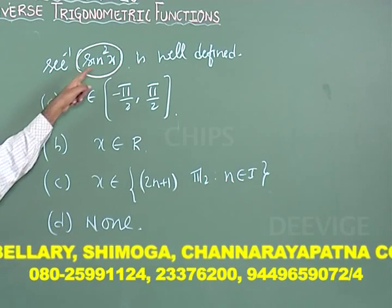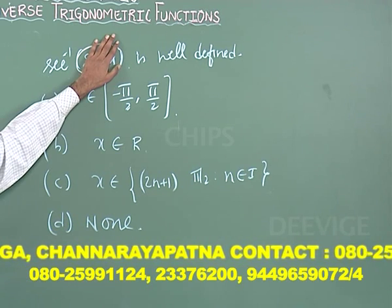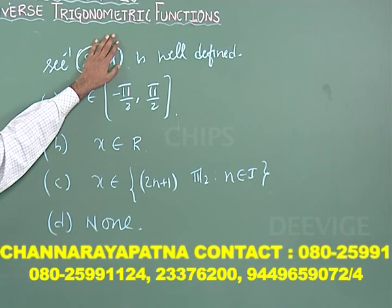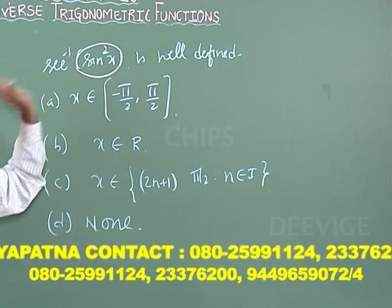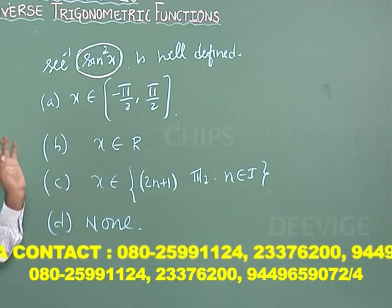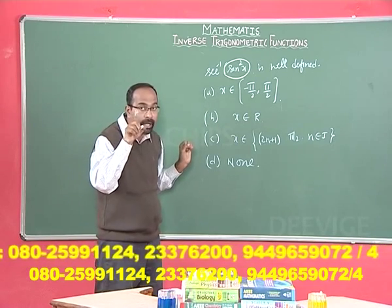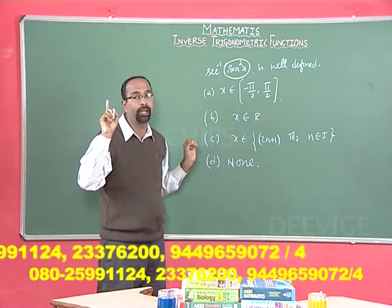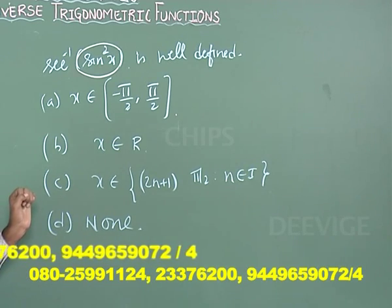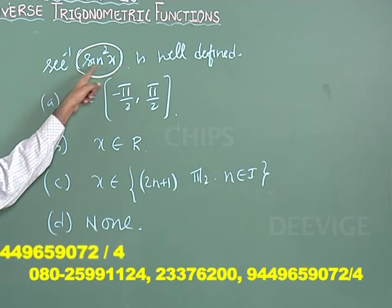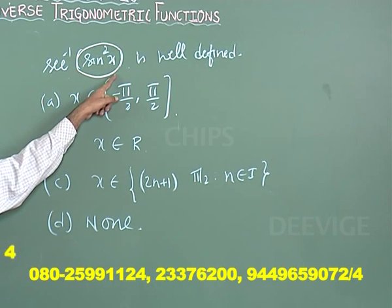Therefore, sin²x = 1 is the only possibility. That is possible only when x = π/2 or multiples thereof. Even sin(−π/2) gives sin²(−π/2) = +1, so sec⁻¹(+1) is defined.